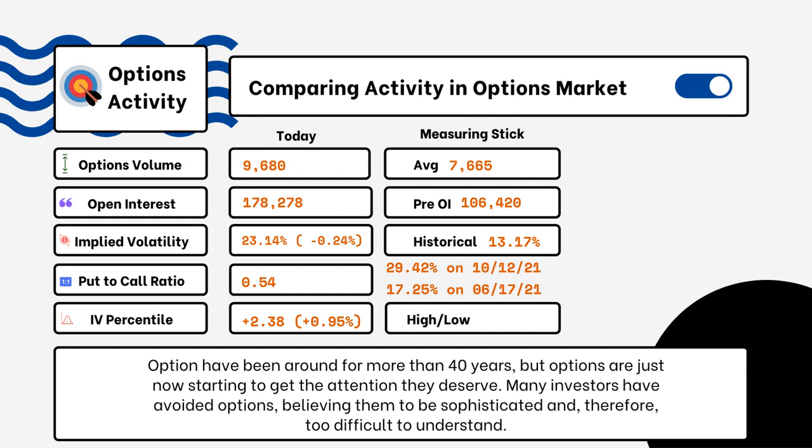We've provided details on today's option activity. What you'll be able to see here is options volume, open interest, implied volatility, put-to-call ratio, and IV percentile. One of the most popular indicators for traders is the put-to-call ratio.